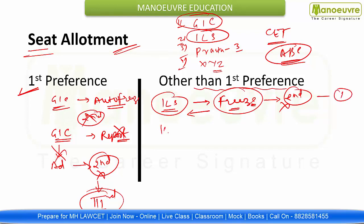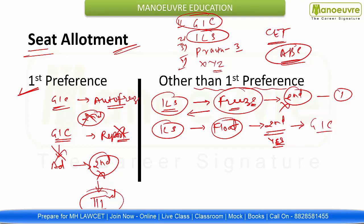The second chance: if you got ILS because it's other than first preference and you want GLC, not ILS — then you float the option. Now if you floated the option, you can participate in the second round and try for GLC. But friends, here's what will happen: you floated, went to Round 2, applying for GLC — but the ILS seat that you got will be cancelled, because you are participating in the second round and you have not paid any seat acceptance fees. This is the second chance.